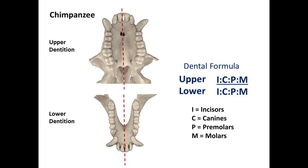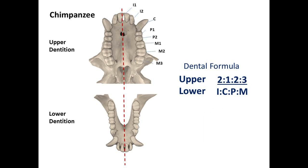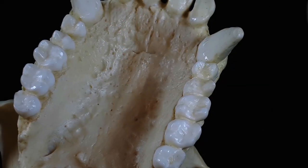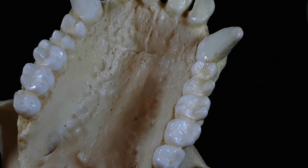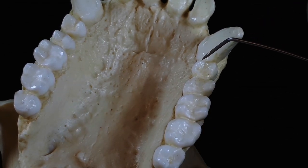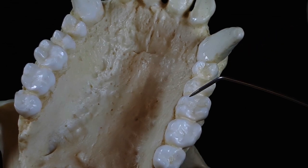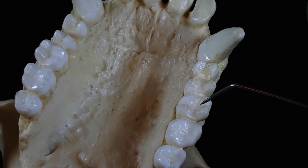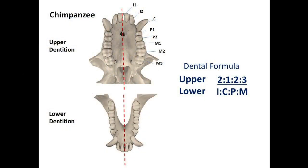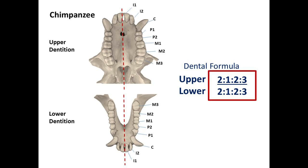For this chimpanzee upper jaw we have two incisors, one canine, two premolars, and three molars. You can differentiate between the premolars and the molars based on the number of visible cusps. In primates the premolars have two cusps while the molars have four or five. The upper and lower dentition are the same, so the final dental formula is 2123 over 2123.